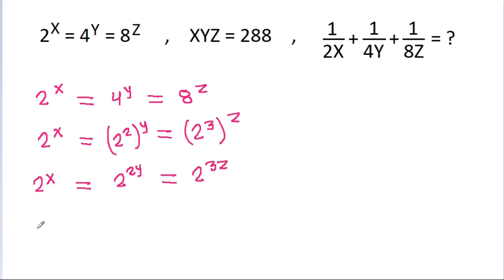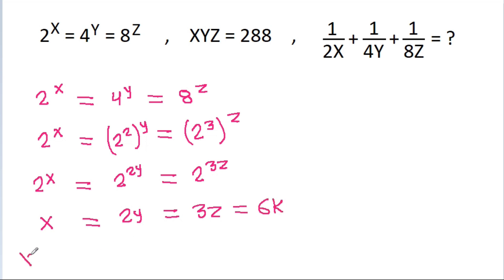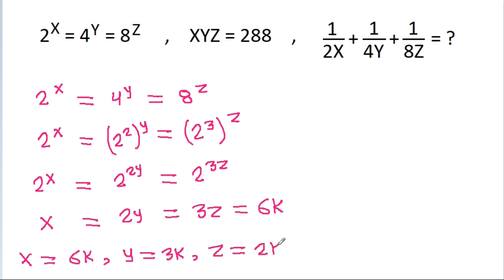So we will get x is equal to 2y is equal to 3g. Suppose this is equal to 6k, then x will be equal to 6k, and 2y is equal to 6k so y will be equal to 3k, and 3g is equal to 6k so g will be equal to 2k.